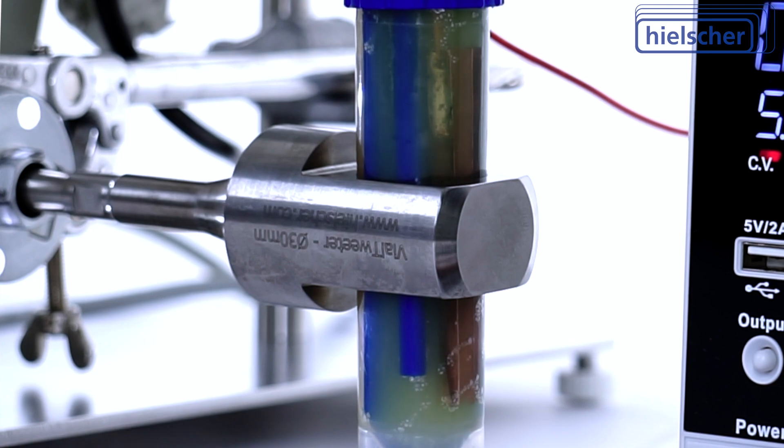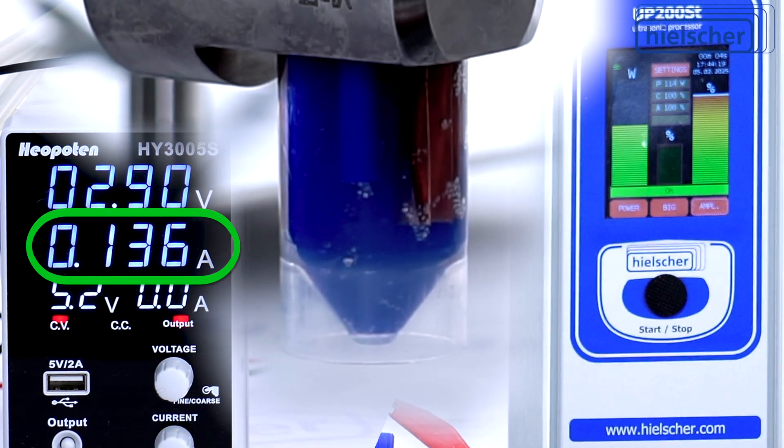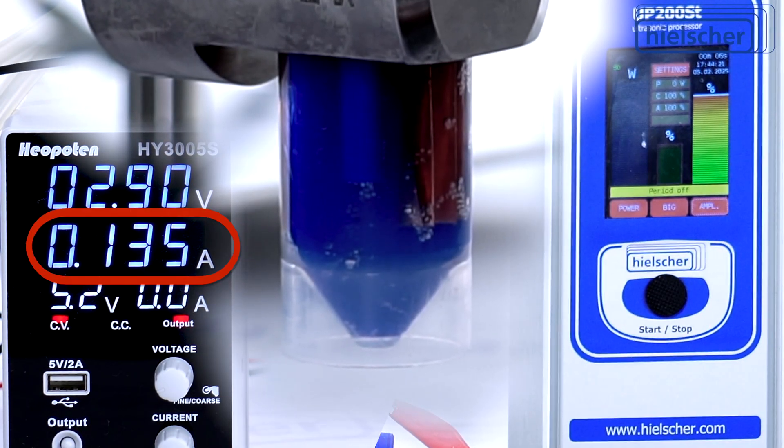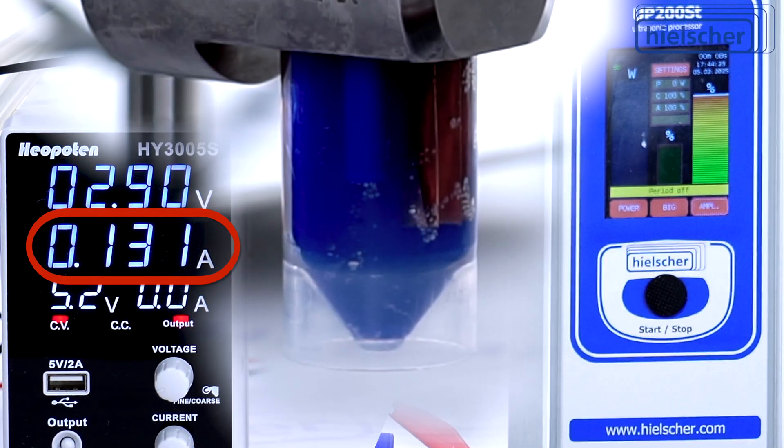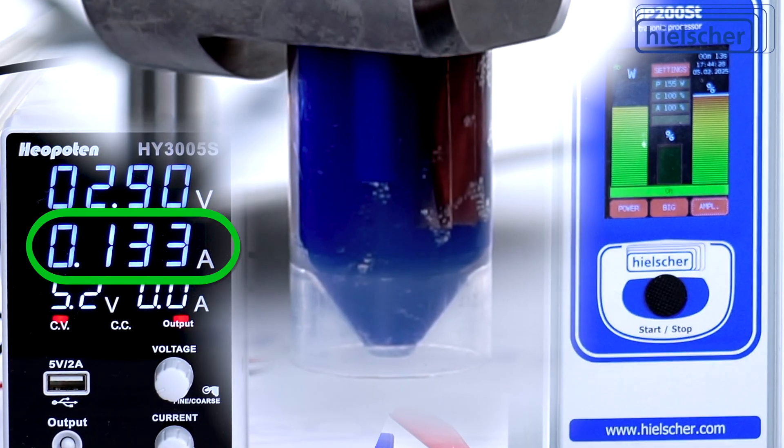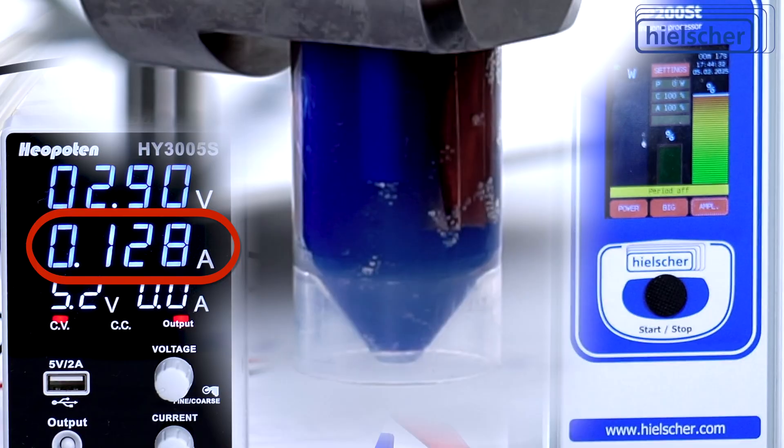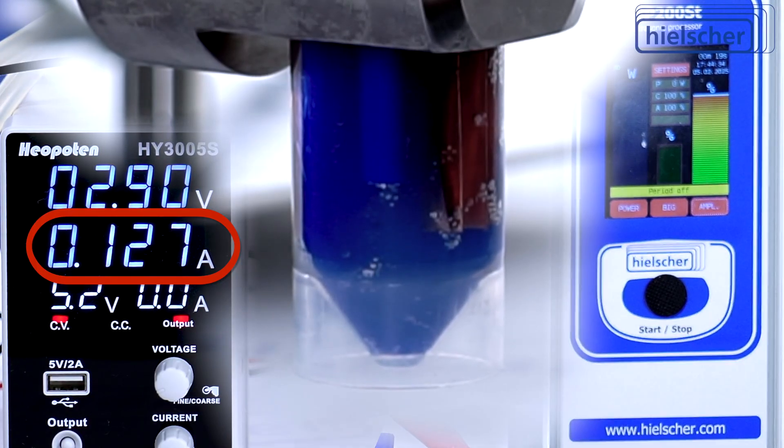This is primarily achieved by removing bubbles and enhancing mass transfer at the electrode surfaces. You can clearly see how the electric current rises during each sonication interval, illustrating how sonication removes gas bubbles that would otherwise inhibit electrolysis. This synergy boosts current flow and accelerates reaction rates, making the Vial Tweeter an indispensable tool for chemical engineers seeking to optimize electrochemical processes.